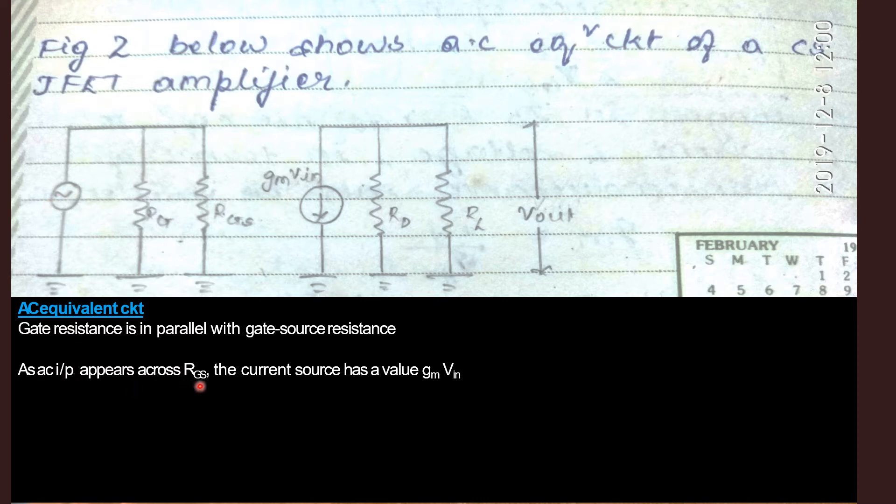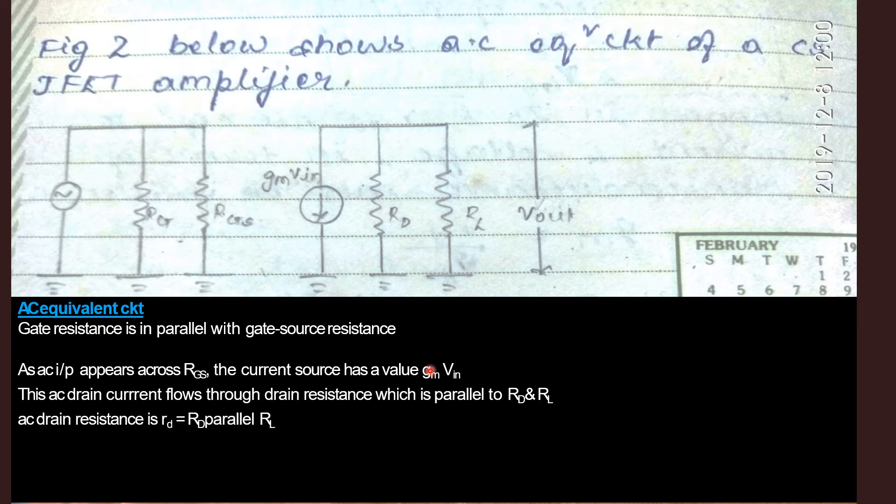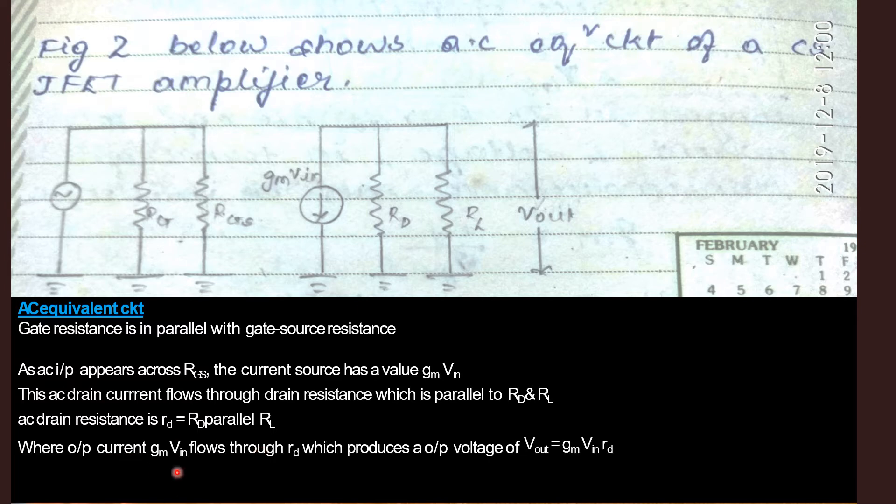As the AC input appears across RGS, the current source has a value GM into VIN. GM is the transconductance. This AC drain current flows through the drain resistance which is parallel to RD and RL. The AC drain resistance is RD which is equal to RD parallel to RL where the output current GM into VIN flows through RD which produces an output voltage of Vout equals GM into VIN times RD.